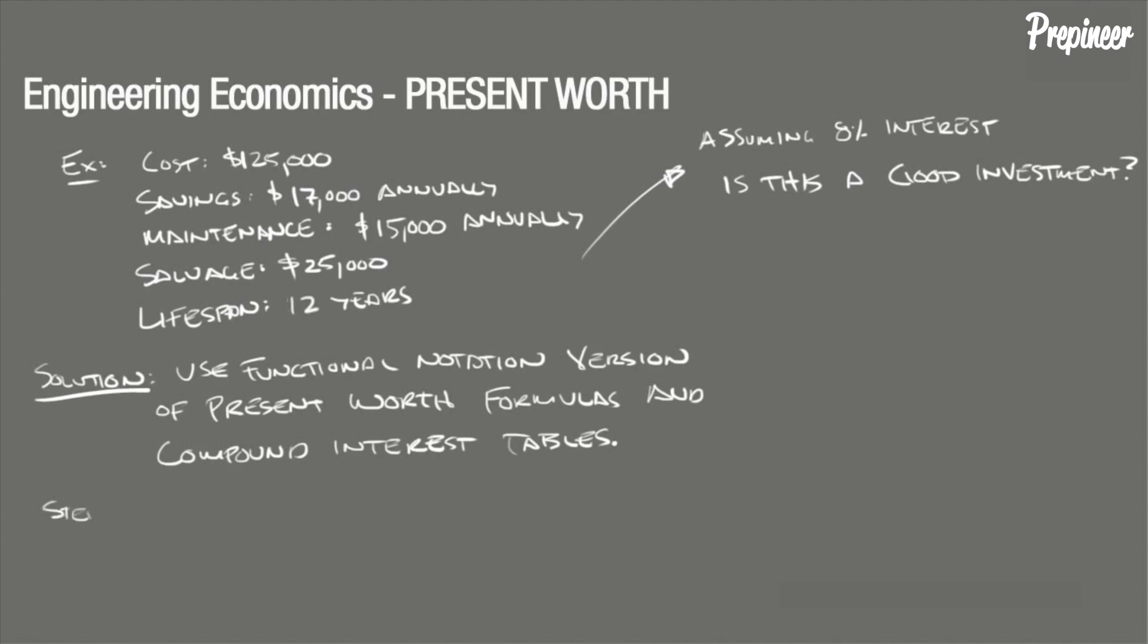The first step in solving this problem is to define the identified costs and benefits, as well as the overall period of the investment. In this problem, we are given a uniform annual cost, let's say A1, of $17,000, and this is a plus or savings from the rent. We're given a salvage value of $25,000, and this is a plus, a savings at the end of the lifespan.